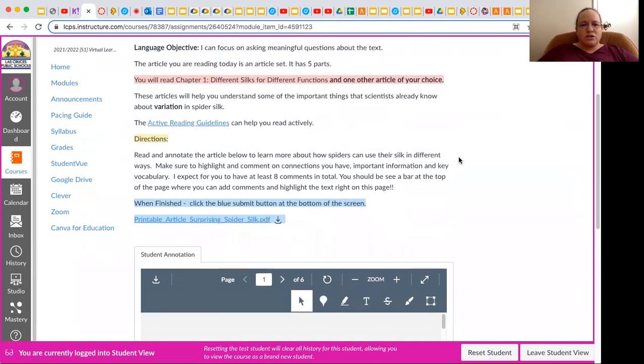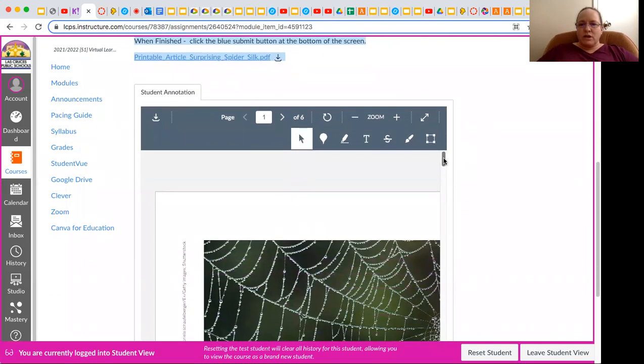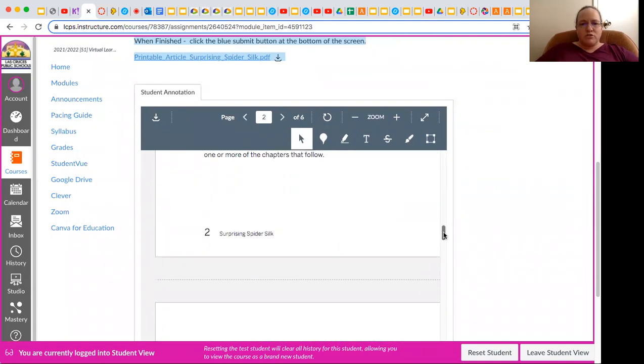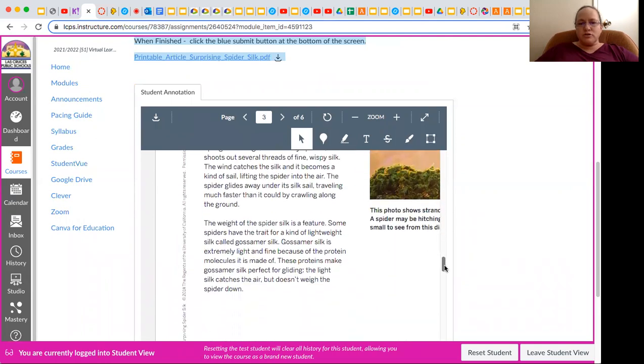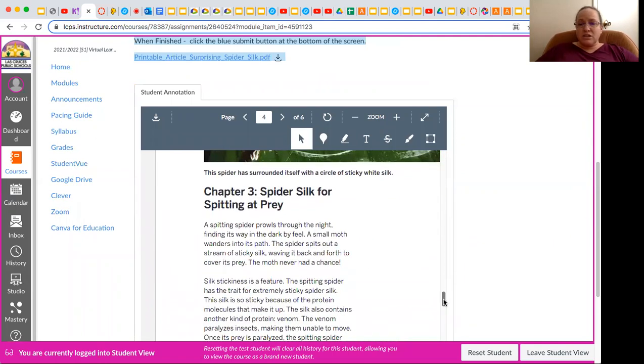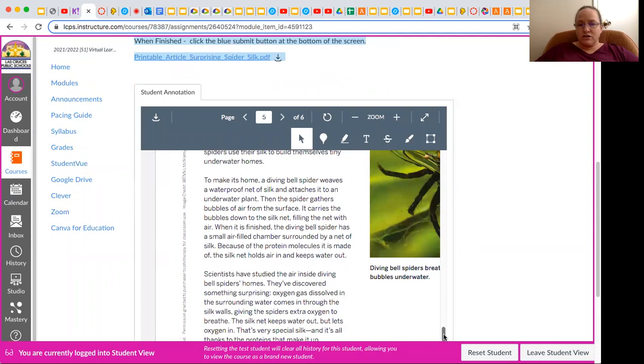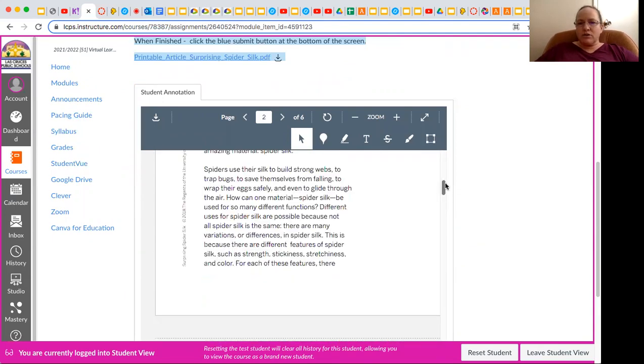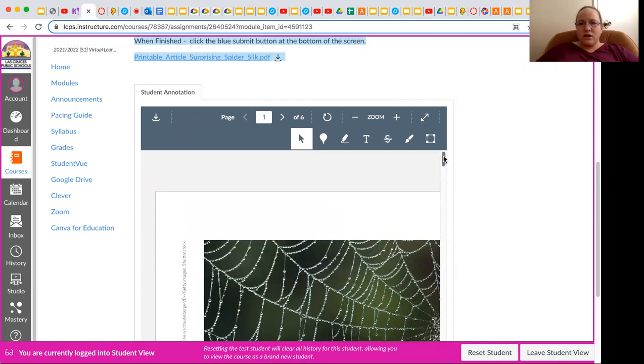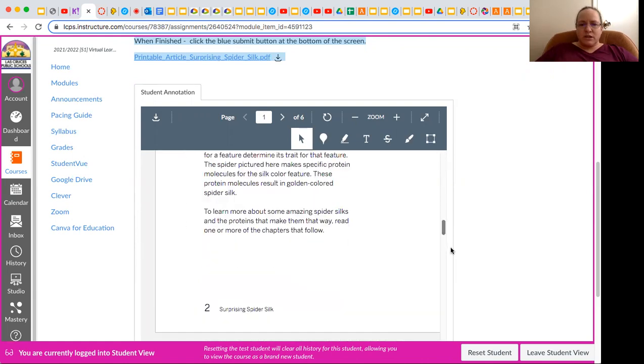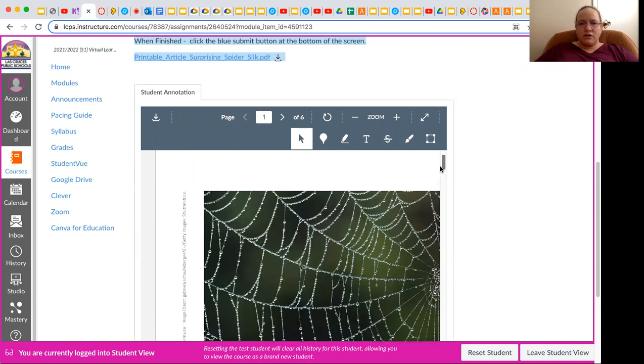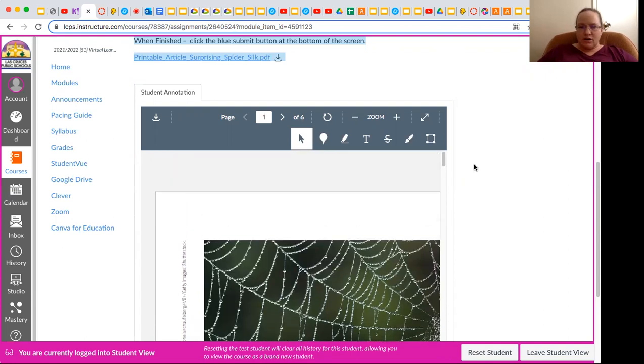So you're going to take time to read about different silks and different functions. And then you're going to choose another article that talks about a specific feature. So notice how, when you come down here, you're going to read chapter one, but then you can choose which chapter you want to read. Now, let's say you did want to read the whole article because you found it interesting and you highlighted and annotated it all. I will give bonus points if you choose to do that. So that's something for you all to think about. If you choose to, you can get some extra credit for reading this entire article.